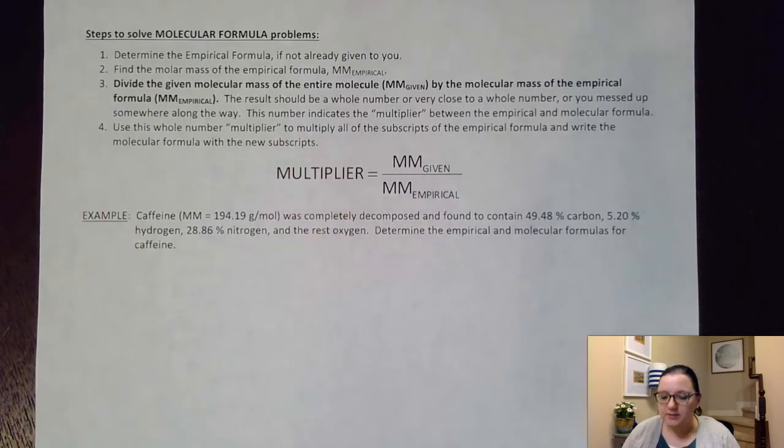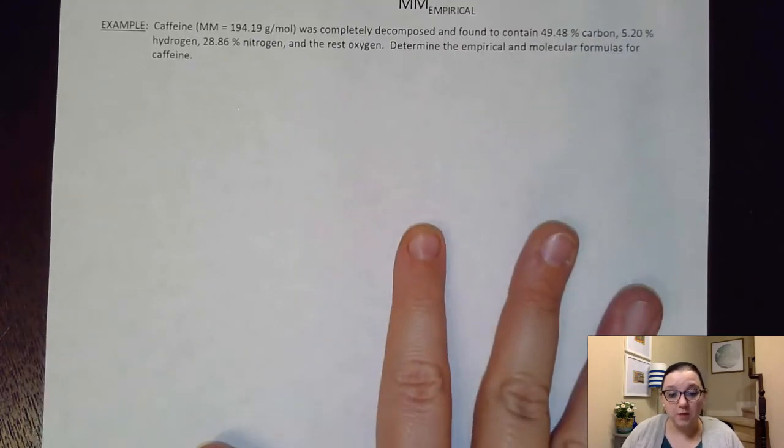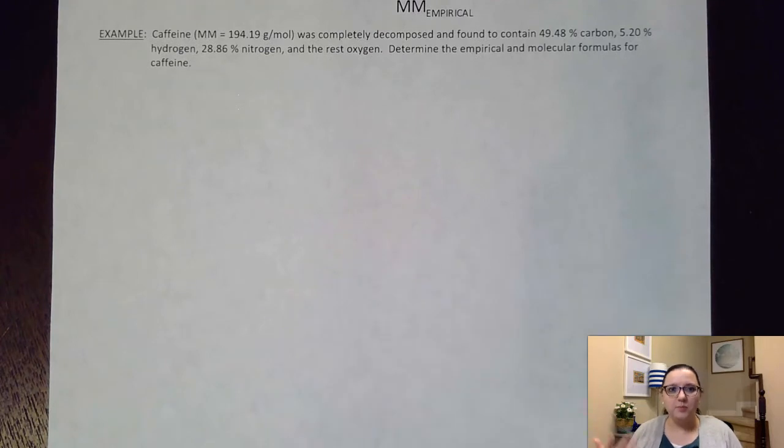Now, at the top of this, there are some directions for eventually solving molecular formula. We'll get back to that part here in a little bit. I want to go ahead and kind of jump into one of these problems just to start to get our brain juices flowing on how to do this. So it gives us a compound here. Caffeine was completely decomposed and found to contain 49.48% carbon, 5.20% hydrogen, 28.86% nitrogen, and the rest oxygen. So they're giving us here a percent composition for this substance.